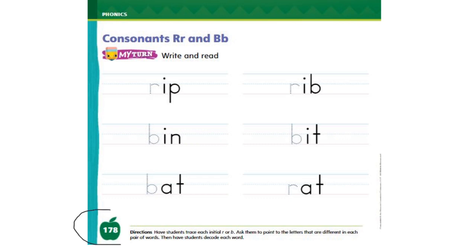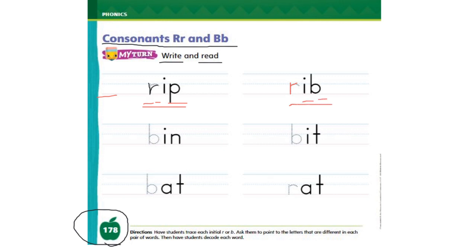In your books on page number 178 for the consonants R and B, we have to write and read. You need to trace the letter R in the words or the letter B and read them. Let's read the first one: R - i - th - rip. Now let's trace the letter R in the second word and read it: R - i - th - rib. Well done.